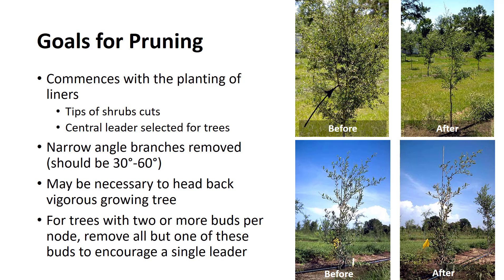Branches that join the stem at narrow angles are weak and should be removed if they are not absolutely necessary for the overall form of the trees. Branches selected for the main scaffolds should form wide angles to ensure that they will withstand stress when they are older.